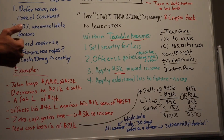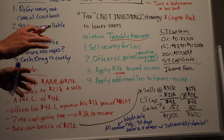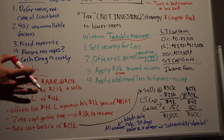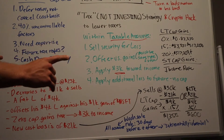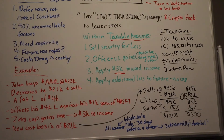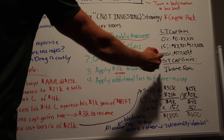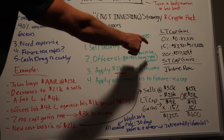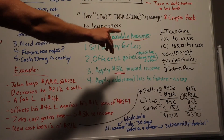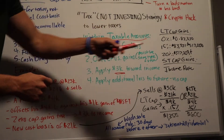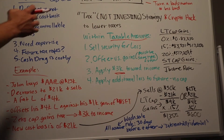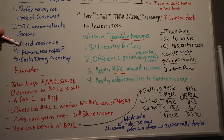This is where good tax strategy and planning comes into play. If you understand when and where to apply these things, it could make sense for some people in some situations. Long-term capital gains means you held the asset more than one year; short-term means less than one year.